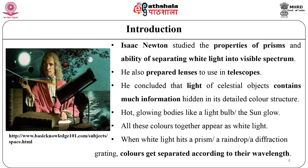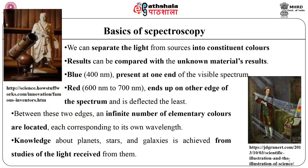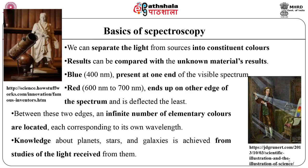Isaac Newton studied the properties of a prism and its ability to separate white light into the visible spectrum. He also prepared lenses to use in telescopes. He observed that the light of celestial objects contains much information hidden in its detailed colour structure. Hot glowing bodies like a light bulb or the sun glow, and all these colours together appear as white light. When white light passes through a prism, a rain drop, or a diffraction grating, colours get separated according to their wavelengths. Similarly, a rainbow is formed in the sky when sunlight hits rain drops. In the laboratory, we can separate light from sources into constituent colours and observe the chemical constitution of gases.